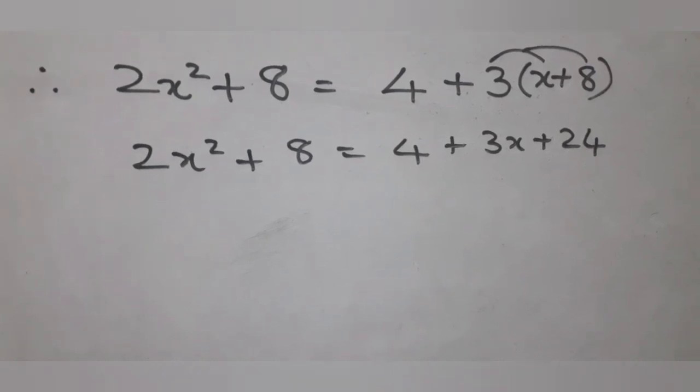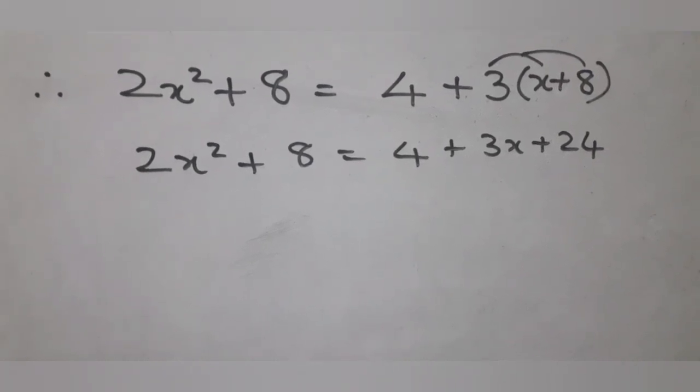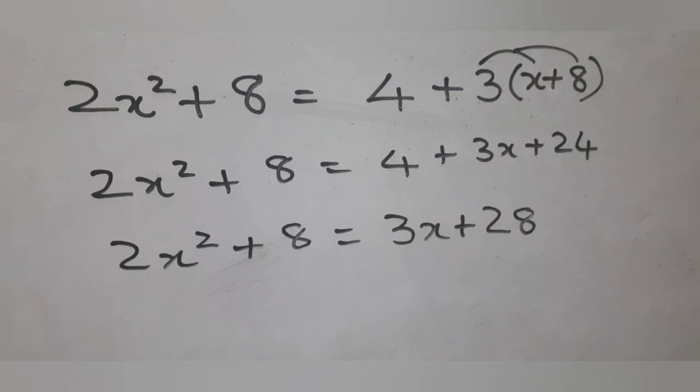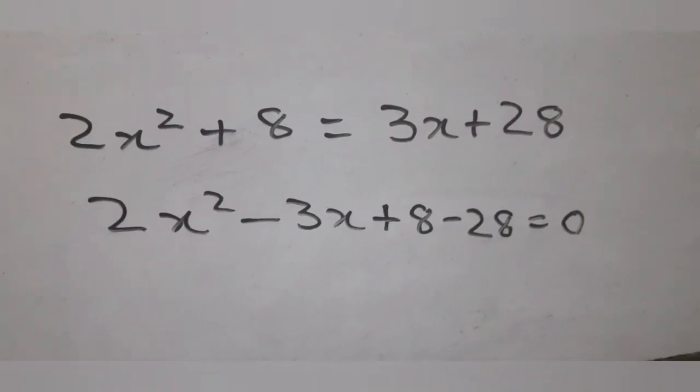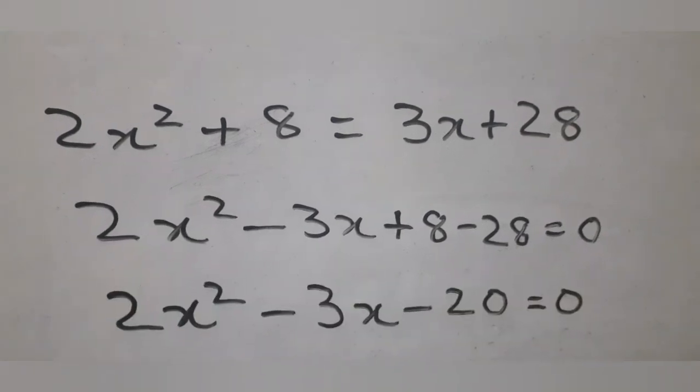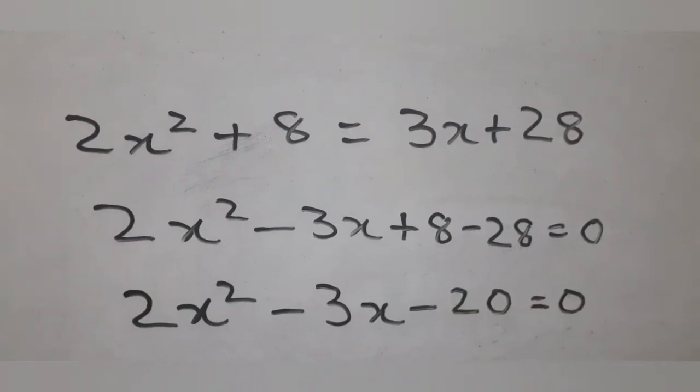Carefully express this as a quadratic equation. We get the quadratic equation 2x square minus 3x minus 20 equal to 0.